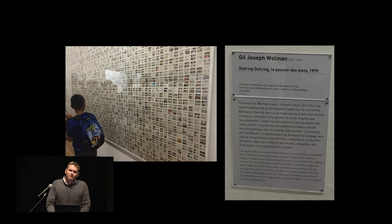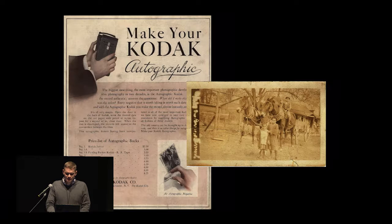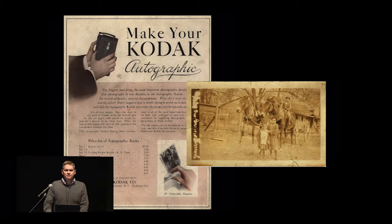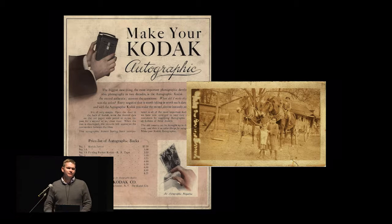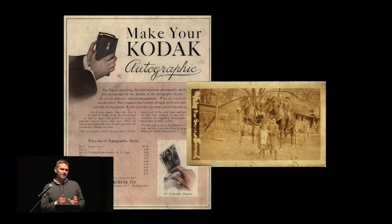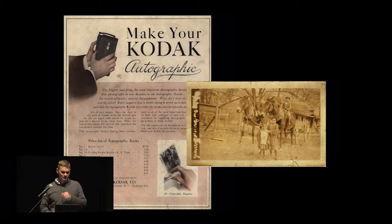We can see that metadata plays a contradictory role in relation to the media it describes, and this goes way back. One of the earliest iterations of metadata is a technology Kodak pioneered called the Autographic. It appeared in 1914 — a redesigned camera back and specially formulated film cartridge that allowed the photographer to open a flap on the back of the camera, record information about the image using a stylus, and expose it to sunlight. This would later be printed in the margin of the image, as you can see here.